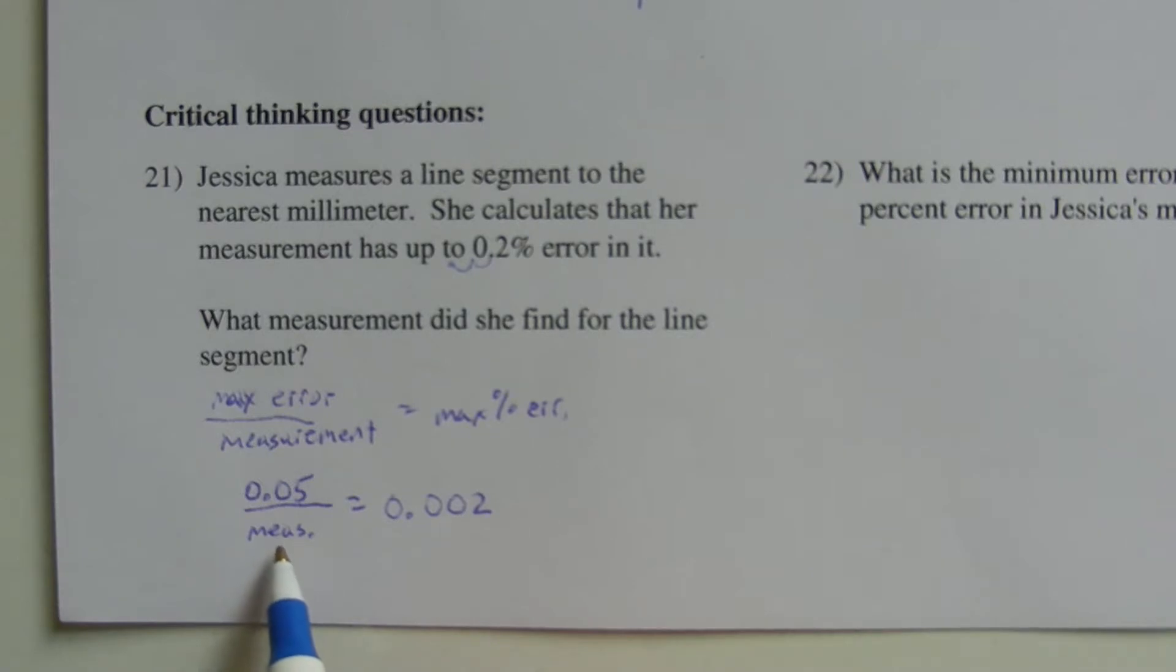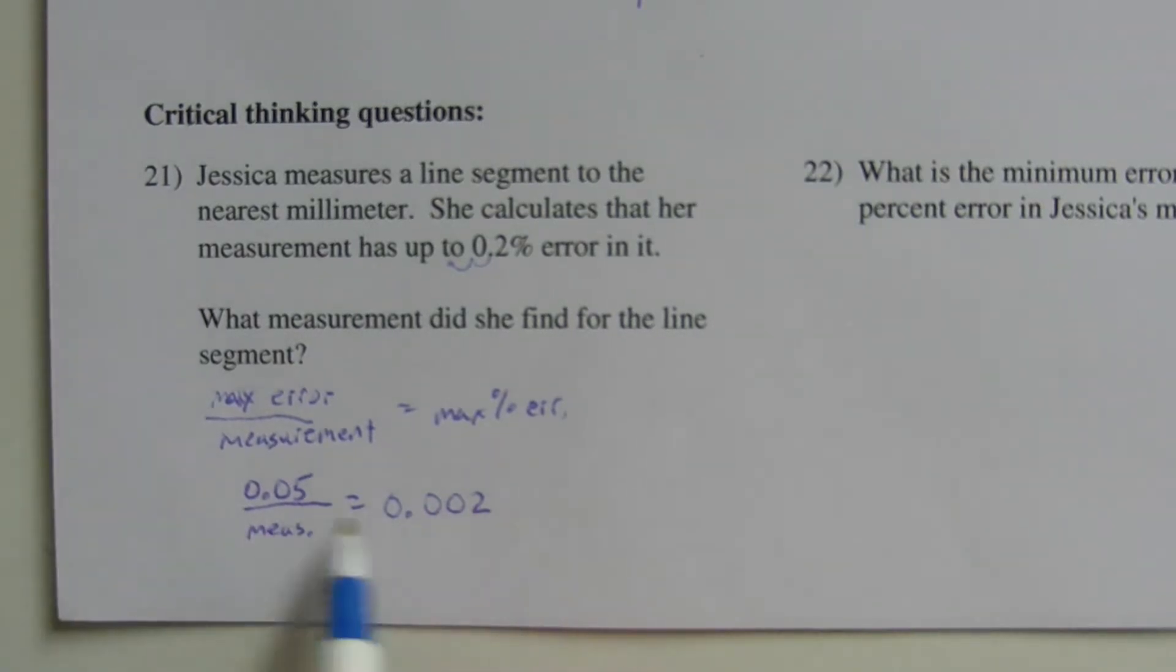Now, using measurement like a variable, we would have to multiply measurement to both sides in order to get it out of the denominator. However, we want to isolate it. So once it's on the right, we need to divide both sides by 0.002.